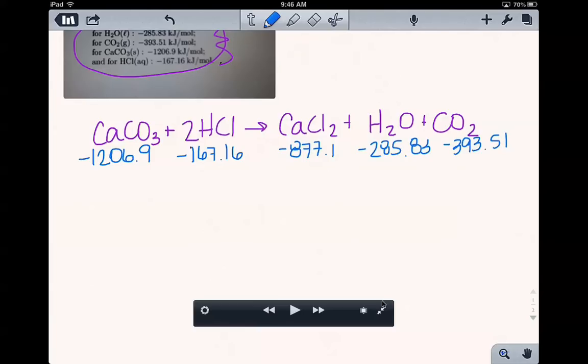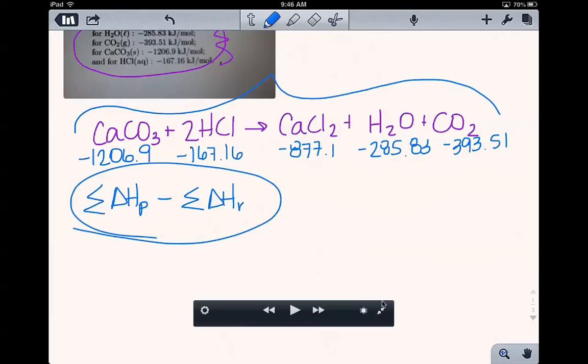So whenever you are trying to find the delta H for the overall reaction, the whole thing, if you remember from the earlier video, you take the sum of the delta H's of the products and subtract the sum of the delta H's of the reactants. There were mole ratios in here, and the delta H of formation specifically, but this is just kind of a shorthand version of that equation.